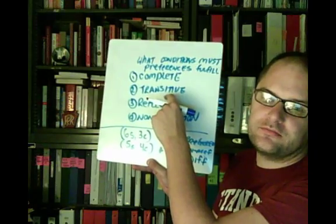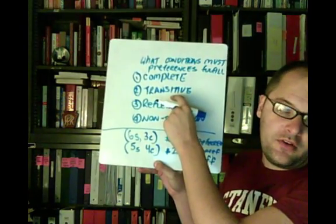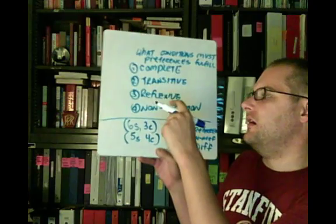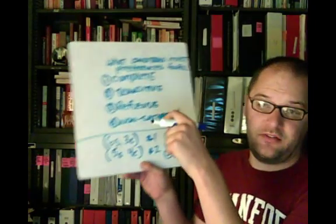For our second characteristic: transitive. Basically what this means is that preferences are logically consistent. If I prefer bundle one to two, and I prefer bundle two to three, then I must also prefer bundle one to three — because otherwise they wouldn't be logically consistent with one another. So the transitive condition just says that preferences are logically consistent.